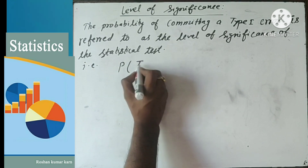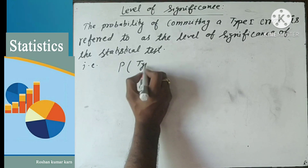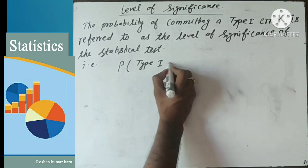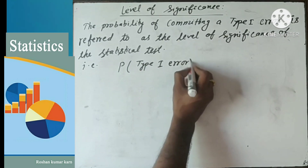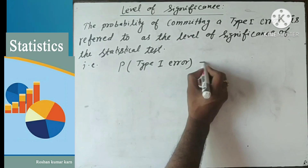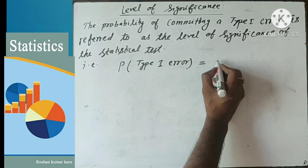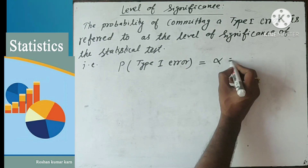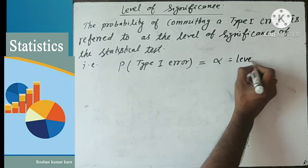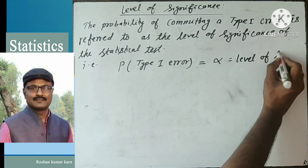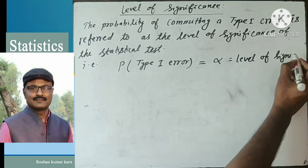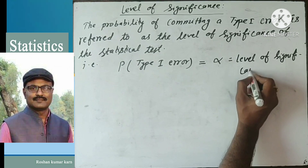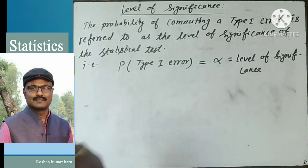The Type I error commit probability, or level of significance, is denoted by alpha. It is called the level of significance, and is represented against alpha.